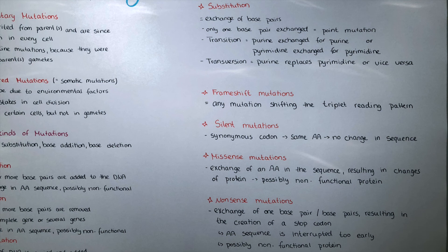The next kind of mutation is a missense mutation, where there is an exchange of an amino acid in the sequence resulting in changes of the protein. Another amino acid is put in the sequence instead of the one that should be there, and the protein might be possibly non-functional.